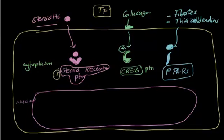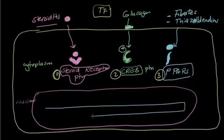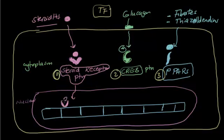So to summarize: you have three types of proteins. The first is the steroid receptor protein, which is the receptor for steroid hormones. The second is the CREB protein, which acts as a second messenger for glucagon. The third is PPAR. Now all three of these work on the DNA — they go and bind to the DNA.